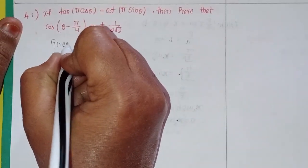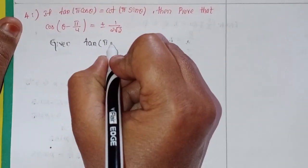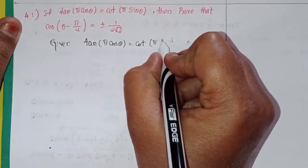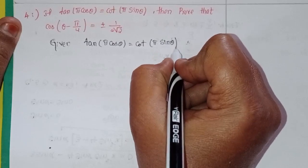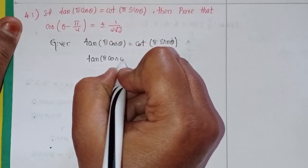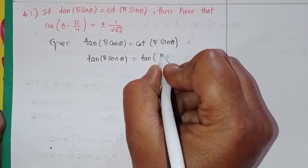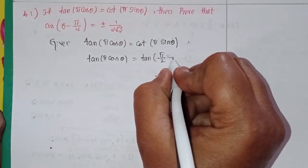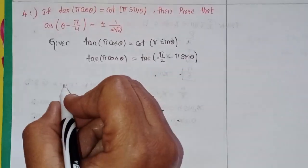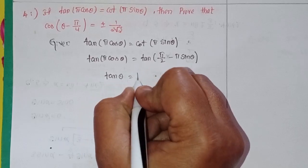Given: tan(π·cosθ) = cot(π·sinθ). We can write cot(π·sinθ) in terms of tan as tan(90° − π·sinθ). So it is now in the form of tan θ = tan α.